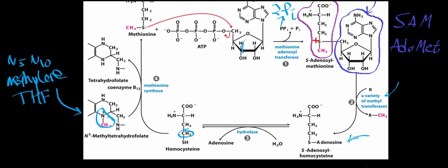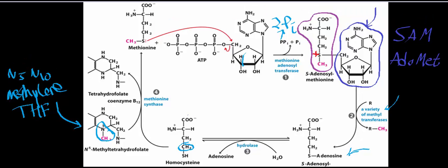Then S-adenosyl homocysteine hydrolase does an SN2 and hydrolyzes off homocysteine, regenerating adenosine. The homocysteine is then consumed by methionine synthase. N5-methyltetrahydrofolate — synthesized from N5,N10-methylenetetrahydrofolate by N5,N10-methylenetetrahydrofolate reductase — transfers its methyl group first to vitamin B12, generating methylcobalamin, and then methylcobalamin transfers its methyl group to homocysteine, generating methionine.